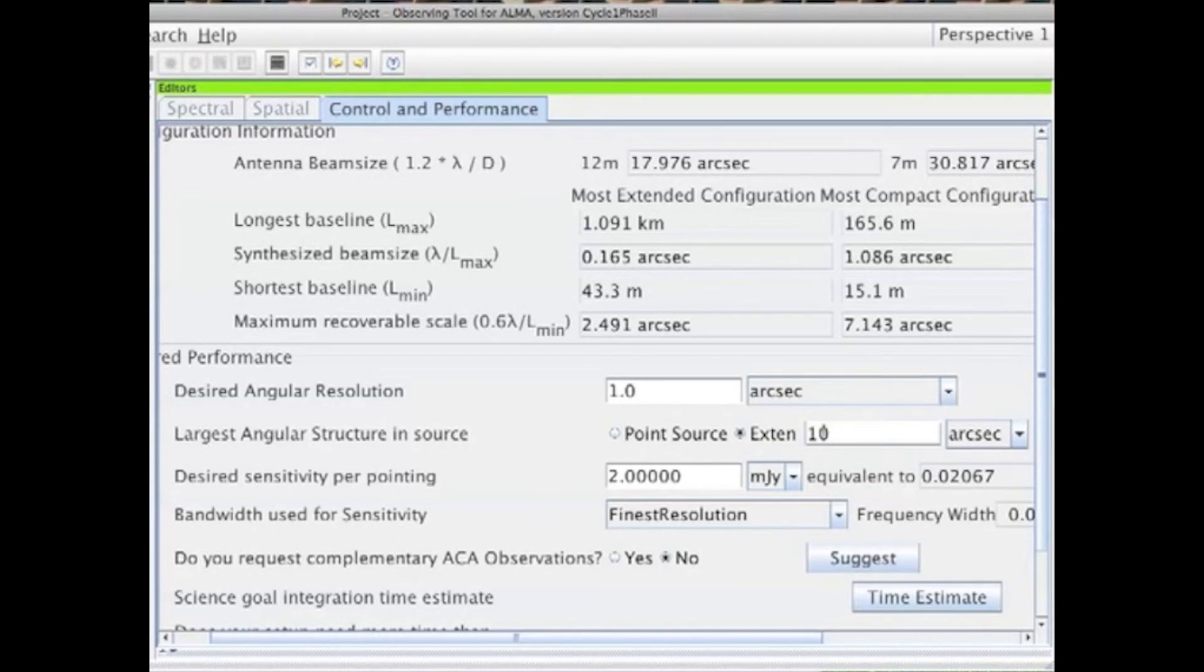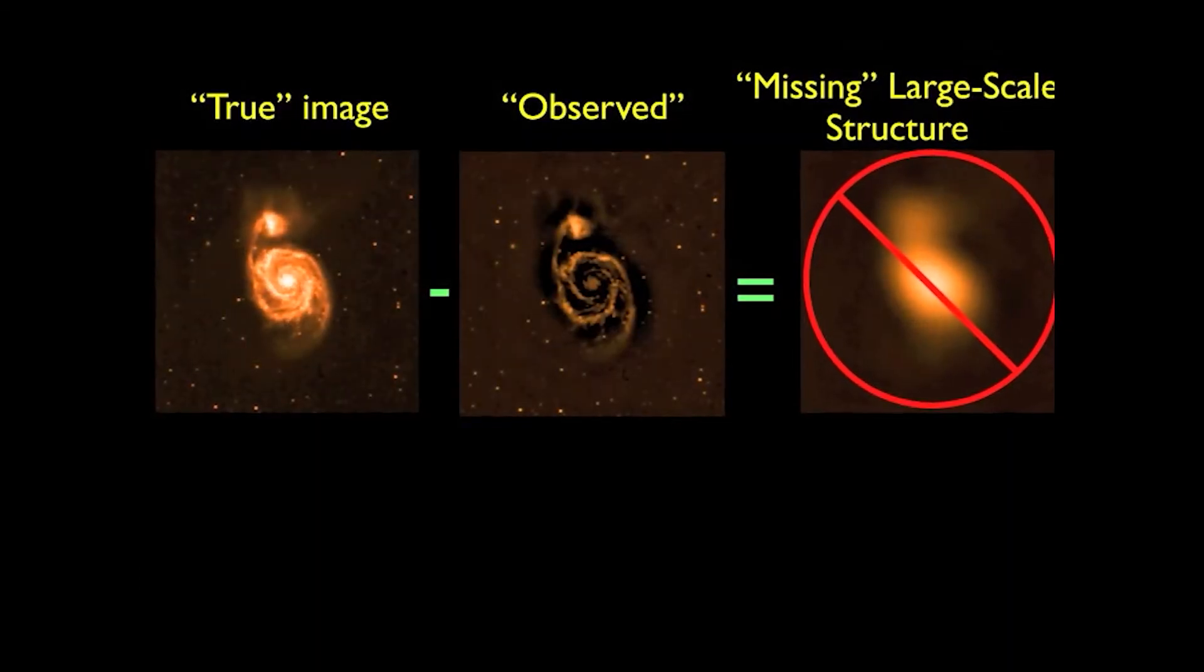In this example, we see that the most compact configuration will give us nearly the target resolution of one arc second, but the maximum recoverable scale is only 7.1 arc seconds. With these observations alone, we wouldn't be able to recover all the emission from the target clouds.